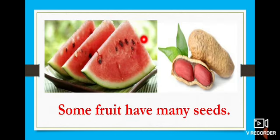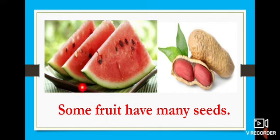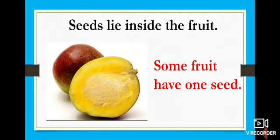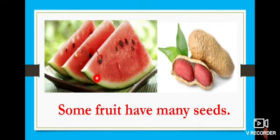And look at the next one. What fruit is that? This is also something you like to eat during the summer season. When you are thirsty, you eat this fruit. What fruit is that? Watermelon. Very good. And look at here — what are these black things? These are all the seeds in that fruit. Some fruits have many seeds — S-O-M-E F-R-U-I-T H-A-V-E M-A-N-Y S-E-E-D-S. Inside the mango we see only one seed, but in this watermelon we can see many seeds.